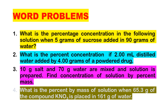Number three: 10 grams of salt and 10 grams of water are mixed and a solution is prepared — find the concentration of the solution by percent by mass. Number four: what is the percent by mass of a solution when 65.3 grams of potassium nitrate is placed in 161 grams of water?